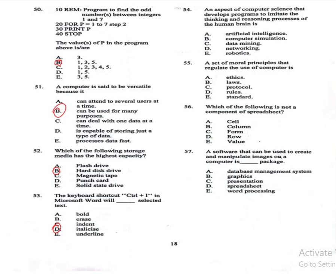Question 54: An aspect of computer science that develops programs to imitate the thinking and reasoning processes of the human brain is — A: artificial intelligence, B: computer simulation, C: data mining, D: networking, E: robotics. The correct answer is A, artificial intelligence. Question 55: A set of moral principles that regulates the use of computers is — A: ethics, B: laws, C: protocols, D: rules, E: standard. The correct answer is A, ethics.